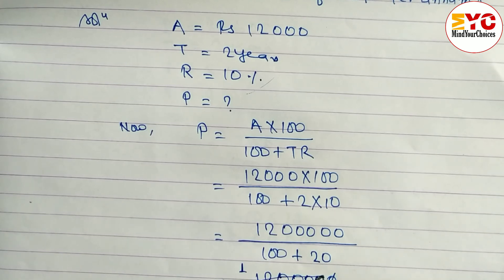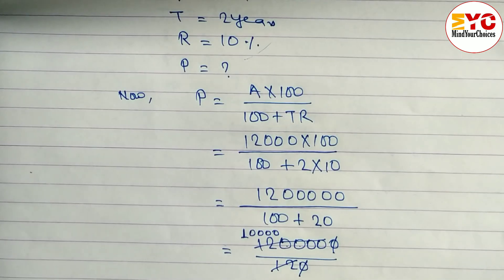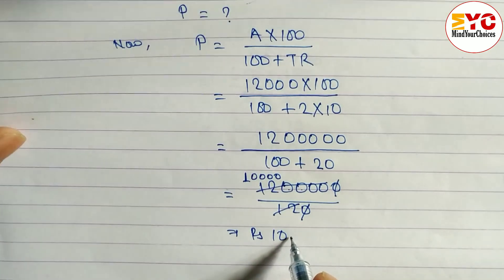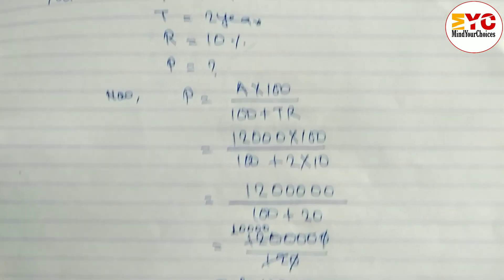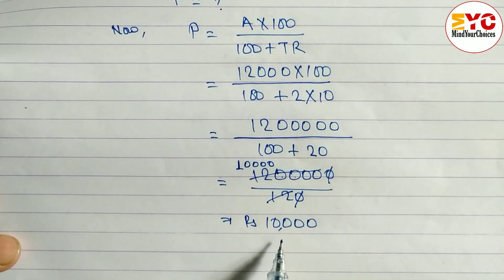So we can write here 1, 2, 3, 4. So what we can write here? Principle is equal to rupees 10,000. So amount is equal to 12,000 and we get here principle is equal to 10,000.